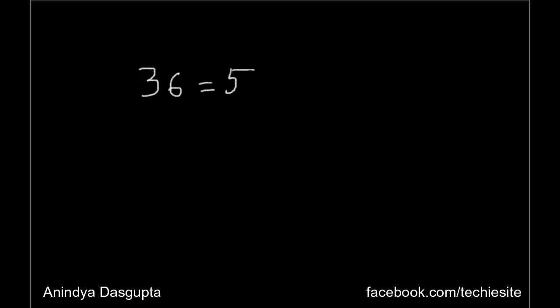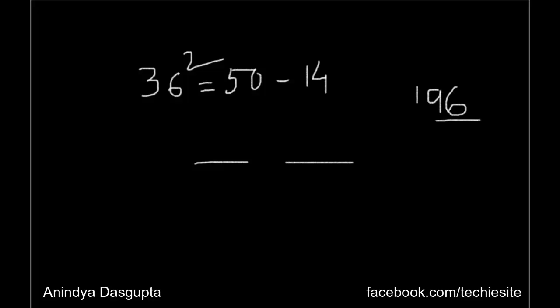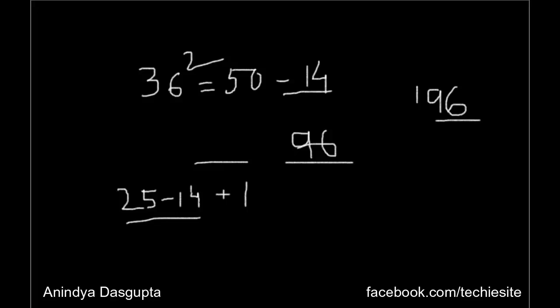Let's take another example: 36 squared. 36 is nothing but 50 minus 14. The last two digits will be 14 squared, which is 196. We take 96 as the last two digits and carry over 1. For the first two digits: 25 minus 14 is 11, plus the carryover of 1 gives us 12. So 36 squared is 1296.